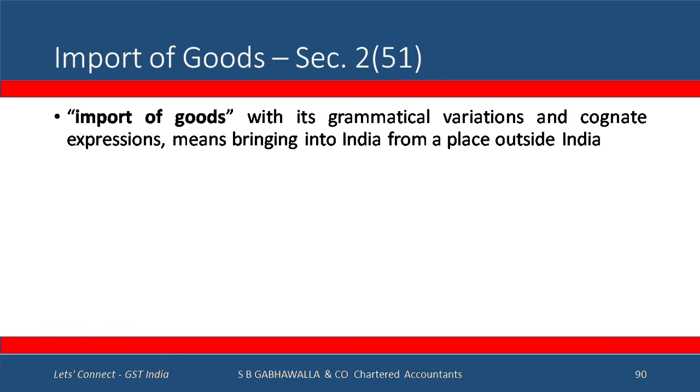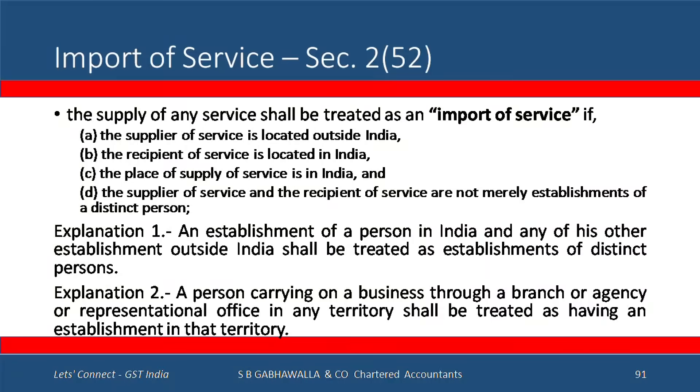Section 251 defines import of goods as bringing into India from a place outside India — exactly the mirror image of export. Section 252 defines import of service. The supply of any service shall be treated as import of service if: (a) the supplier of service is located outside India, (b) the recipient of service is located in India, (c) the place of supply of service is in India, and (d) the supplier and the recipient are not merely establishments of a distinct person. Section 261 states that an establishment of a person in India and any other establishment outside India shall be treated as an establishment of a distinct person.